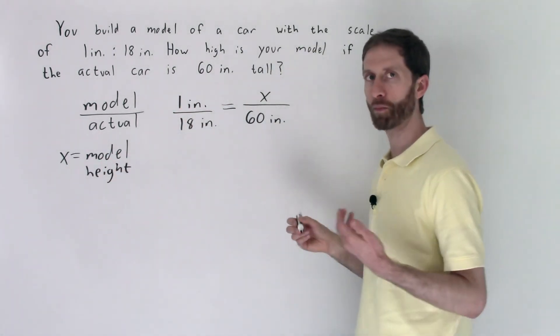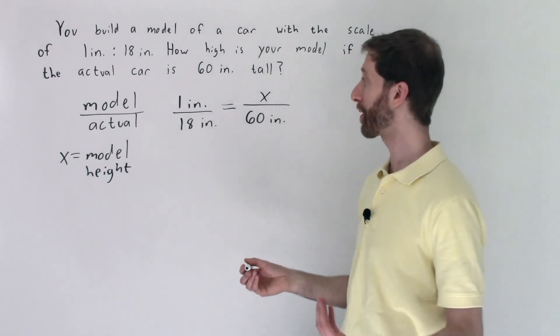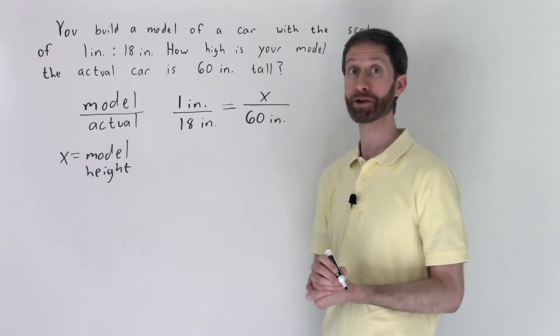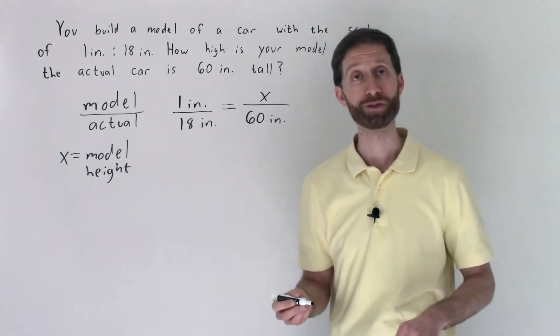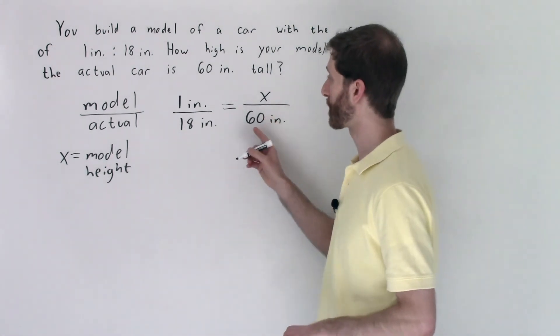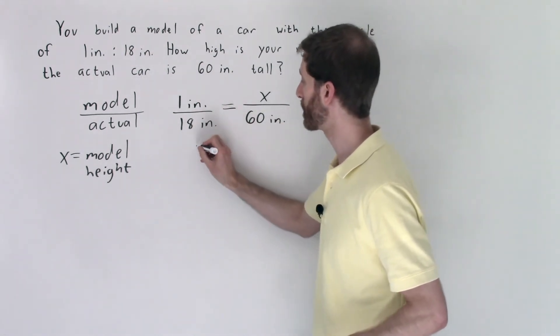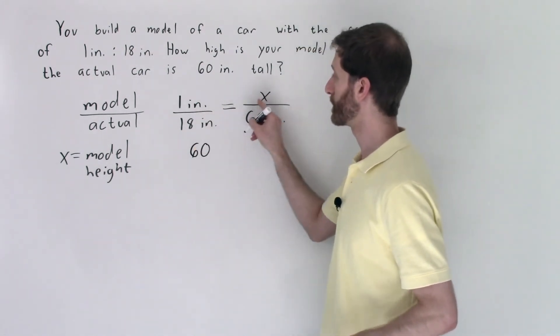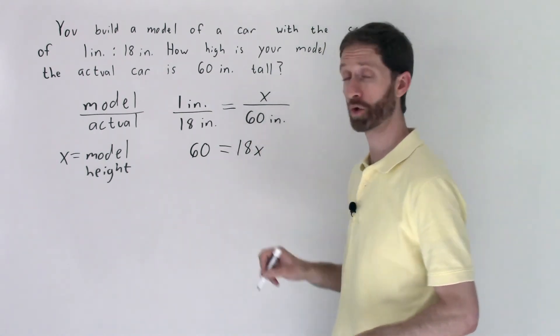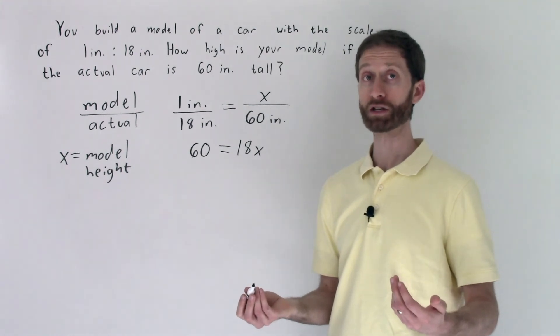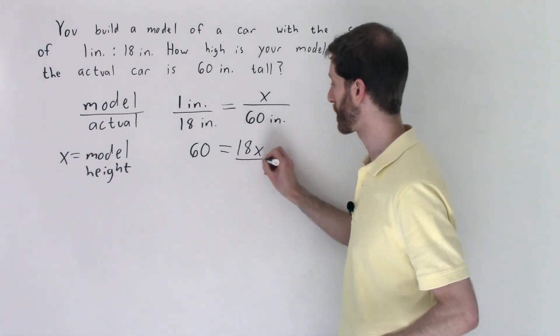Once we have our proportion all set up with corresponding parts, model to actual equals model to actual, we just need to do our damage with math by solving the proportion. We're going to cross multiply seeing that we cannot simplify this any further. 60 times 1 is 60, 18 times x is 18x. We're left with an equation that we've solved many a time. Now we're going to undo multiplication of 18 by x by dividing by 18, and of course we've got to do that on both sides.